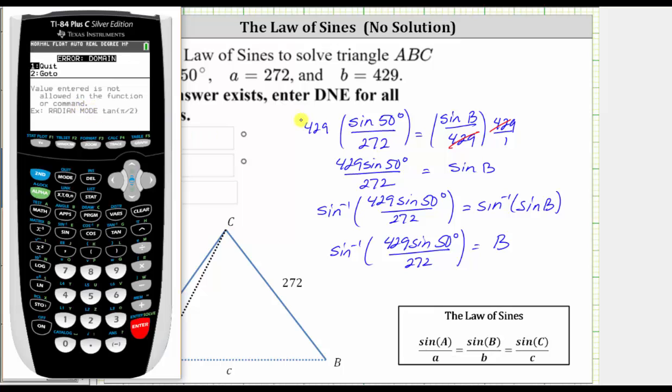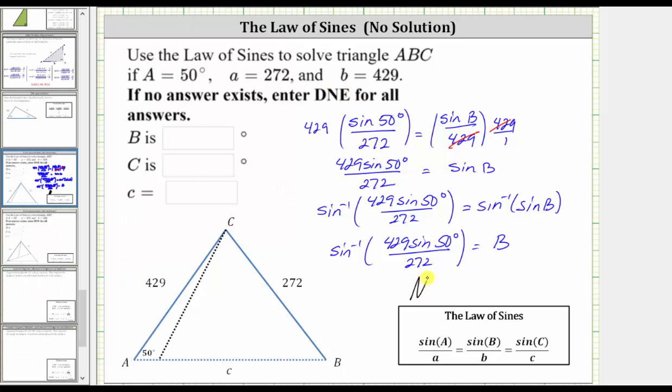Notice how we get a domain error, which means it's not possible to create a triangle from the given information, and we can just say no solution.